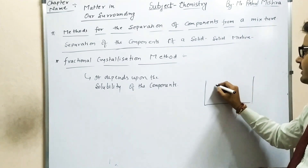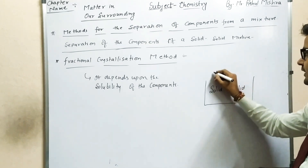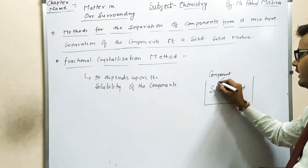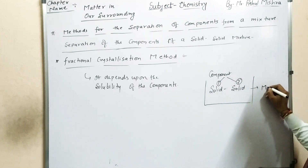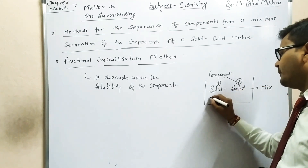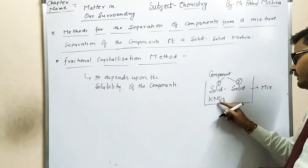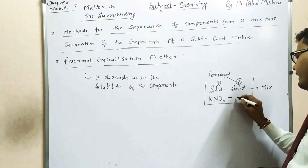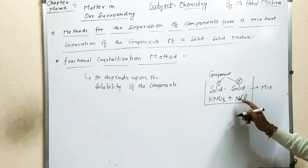If you have a solid-solid mixture in which the first component is solid and the second component is also solid, then this mixture is called a solid-solid mixture and you have to separate it. For example, if you have a mixture of KNO3 (potassium nitrate) and NaCl.